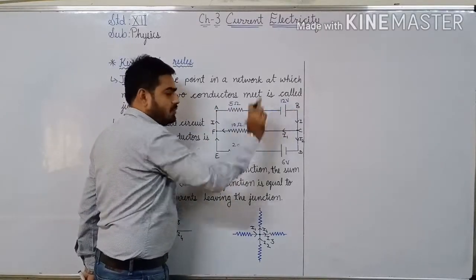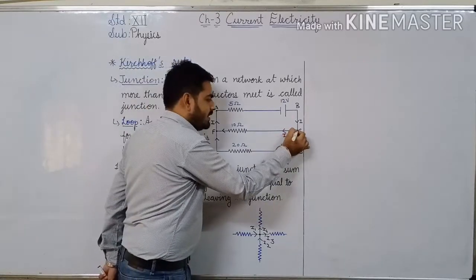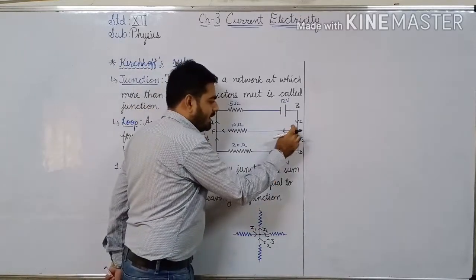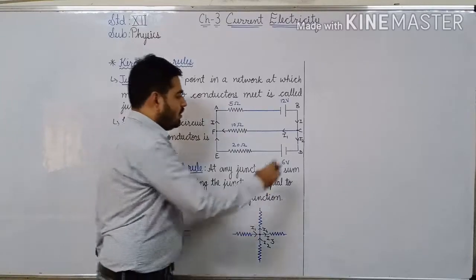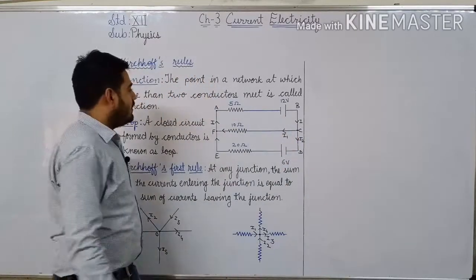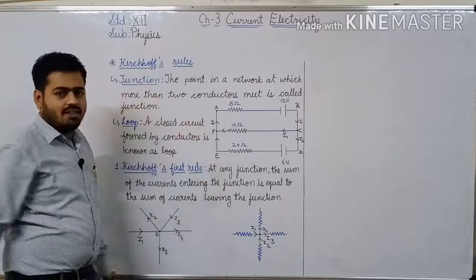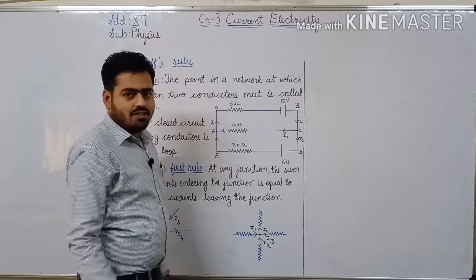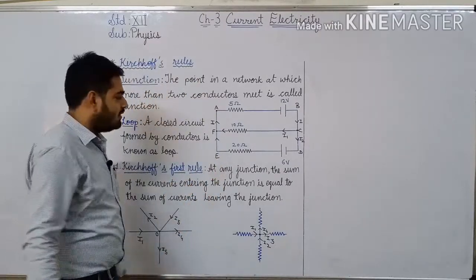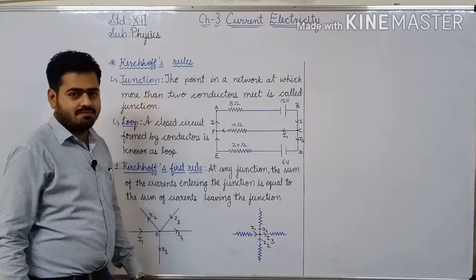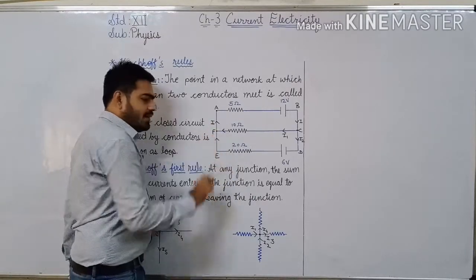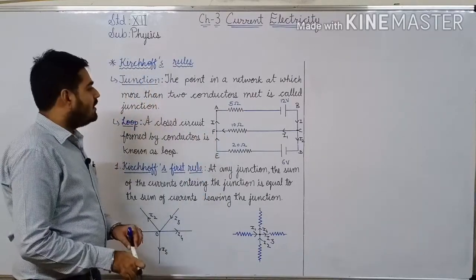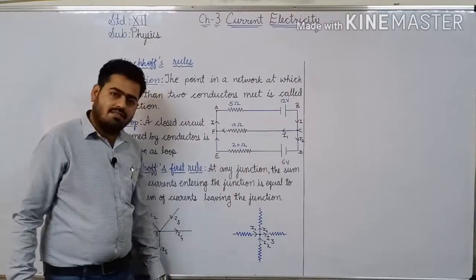Here, two conductors are meeting at point C — one, two, and three. More than two conductors are meeting at point C, so we can call C a junction. Point C is the junction of this network. What about D? D is not a junction. E is not a junction. But F is a junction — here also three conductors are meeting, more than two. Therefore F is a junction. So in this network, C and F are the junctions.